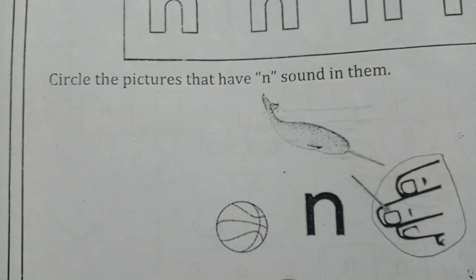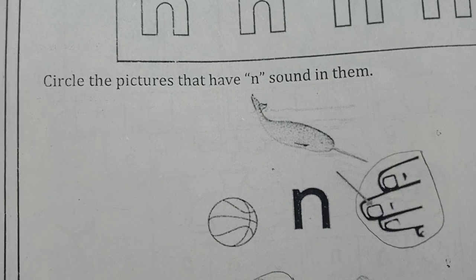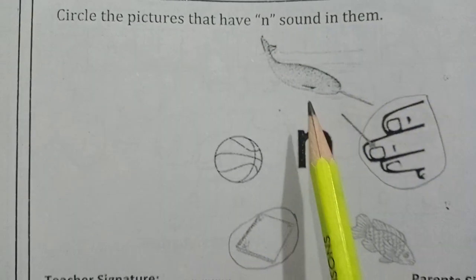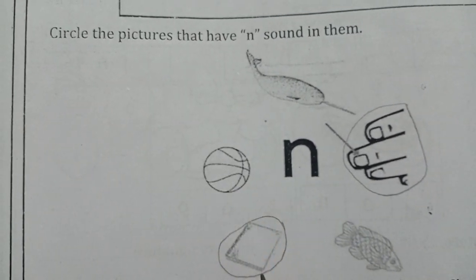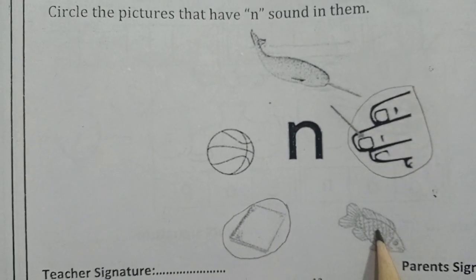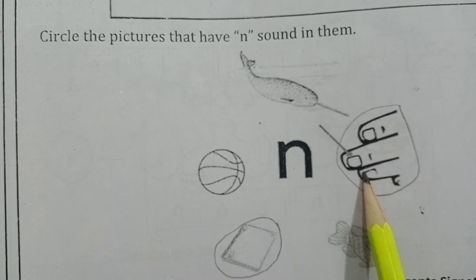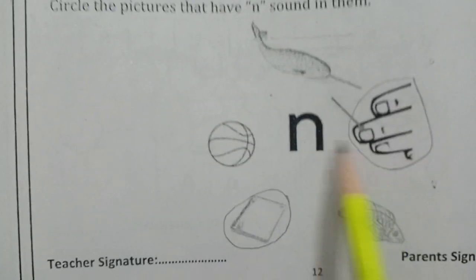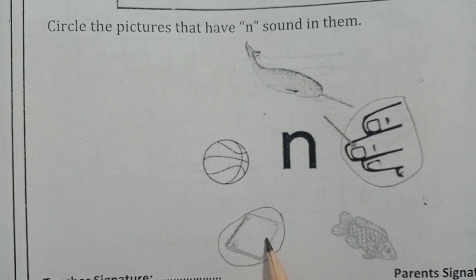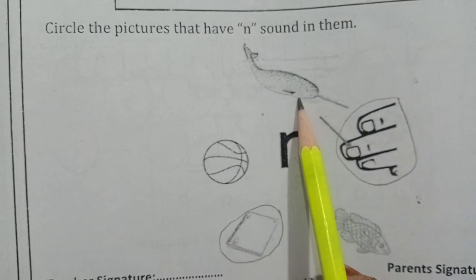Circle the pictures that have 'N' sound in them. Okay: Veil, Ball, Notebook, Fish, Nail. Which one has the beginning sound? Nail, Notebook. Okay. Does Veil have it?